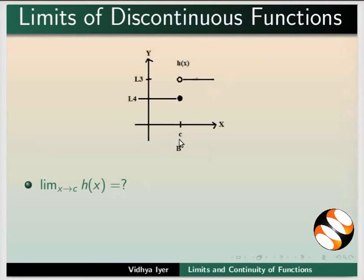For the left hand limit, look at the lower limb where the limit is L4. For the right hand limit, look at the upper limb where limit of h of x is L3. But as x approaches C, the 2 limbs of h of x approach different values of y.